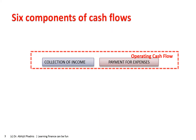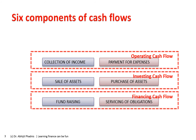There are six components of cash flows. Three inflows: collection of income, sale of assets, and fundraising from equity or debt sources. Three outflows: payment for expenses to various vendors, purchase of assets, and servicing of obligations to investors and lenders — paying interest, dividends, and repaying loans. Collection of income and payment for expenses together make up operating cash flow; sale and purchase of assets make investing cash flow; and fundraising plus servicing obligations make financing cash flow.